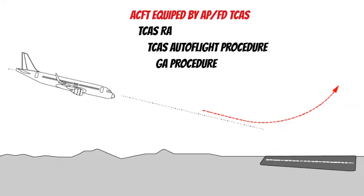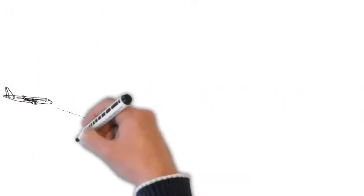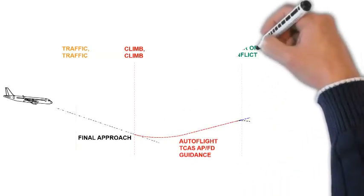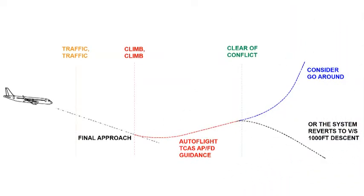When clear of conflict, the Autopilot Flight Directors TCAS mode automatically reverts to vertical speed to capture the FCU selected altitude. In some cases, the Autopilot Flight Directors TCAS mode may revert to an Altitude Acquire mode or an Altitude Hold mode. The pilot flying engages an appropriate vertical mode or adjusts the vertical speed target according to ATC clearance.